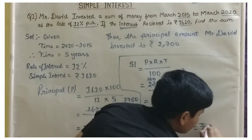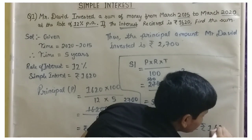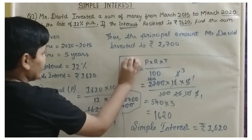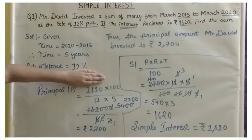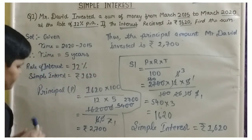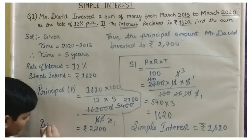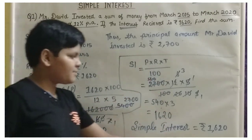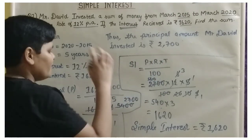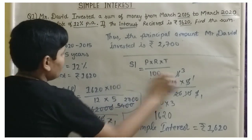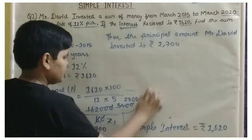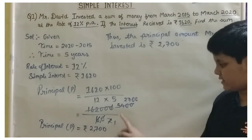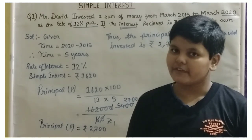1,620 — that was our interest here. So what we did was: we verified our simple interest value. We know R (rate of interest), T (time), and P (principal). We substituted in the formula, did all those multiplications, and got the simple interest. This is just for checking purposes. Our main answer — the principal — is Rs. 2,700.